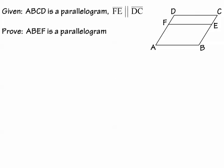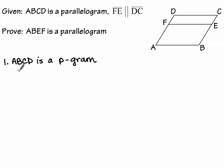We'll work through three proofs. The first one: ABCD is a parallelogram and segment FE is parallel to segment DC. With every proof we start with our givens and see where they lead us. I like to start with my givens first and see what they tell me, and then go to the diagram — sometimes you use them in tandem, which is what we're going to do here.